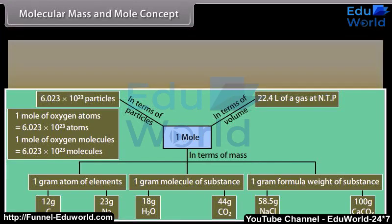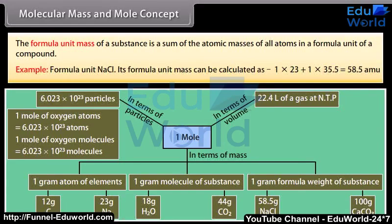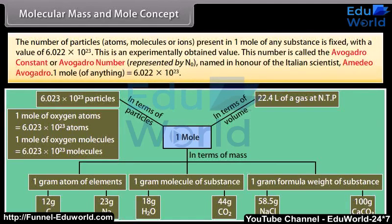The formula unit mass of a substance is the sum of the atomic masses of all atoms in a formula unit of a compound. For example, formula unit NaCl: its formula unit mass can be calculated as 1 times 23 plus 1 times 35.5, which equals 58.5 units.